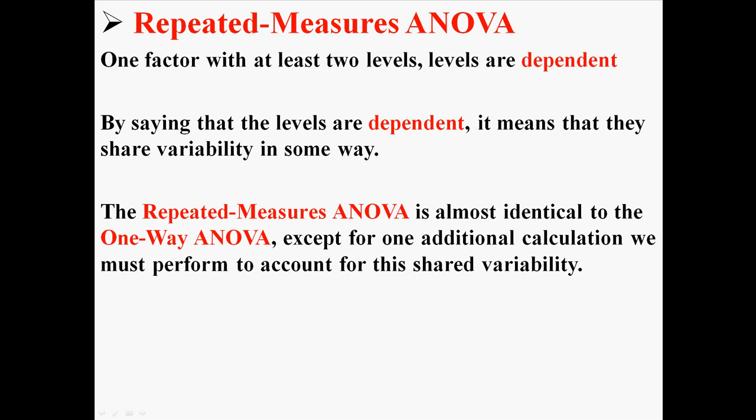Now the repeated measures ANOVA is almost identical to the one-way ANOVA, except for one additional calculation we must perform in order to account for this shared variability. So it's going to be almost the same as the one-way with just a few changes.